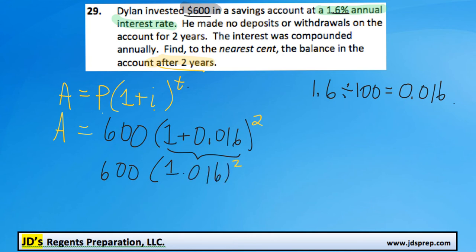Okay, and if we type this into our calculator, you should end up getting a final answer of 619.3536, and because we're rounding to the nearest cent, the nearest penny, it's going to be $619.35.